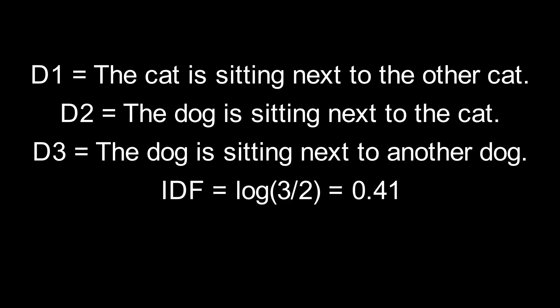The Inverse Document Frequency will be the log of the number of documents, which is 3, divided by the number of documents containing the word cat, which is 2. 3 divided by 2 is 1.5, and the log of 1.5 is 0.41.